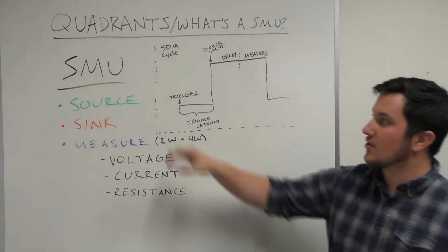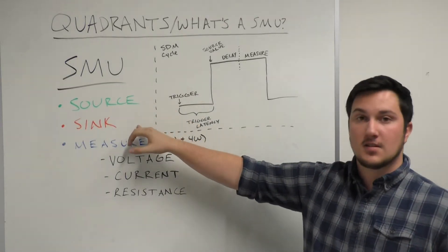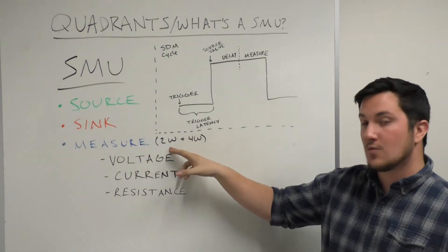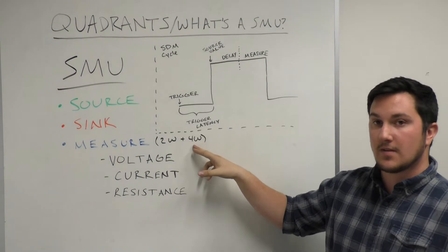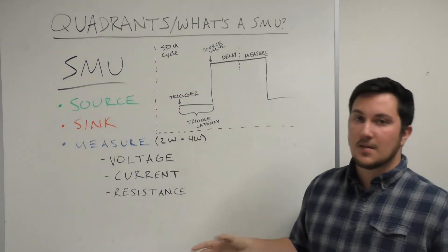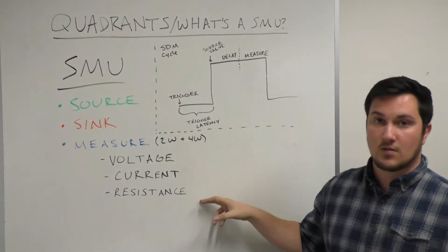When using an SMU, you're able to source, typically sink, and measure. And you're given the option of either two-wire or four-wire measurement methods, four-wire giving you greater accuracy. And typically you'll be working with voltage, current, or resistance.